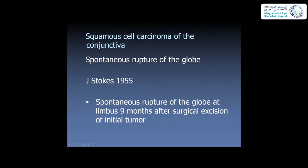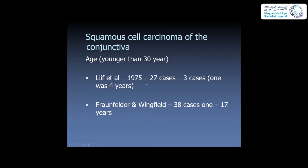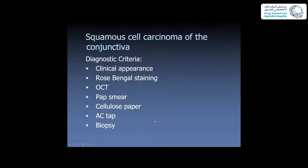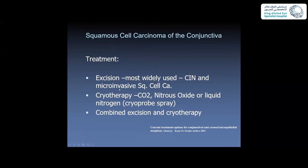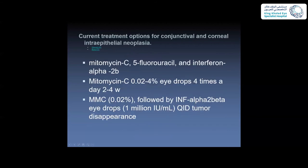Spontaneous rupture of the globe can present as primary or secondary; young patients under 30 have also been reported. Diagnosis of OSSN is mainly clinical, assisted by rose bengal staining, OCT, impression cytology, or biopsy. Differential diagnosis includes degenerative conditions, chronic inflammation, pyogenic granuloma, or other tumors. Treatment most widely used is excision with cryotherapy, sometimes combined. The medical treatment options consist of three medications: mitomycin C, 5-fluorouracil (5-FU), and interferon alpha-2b.